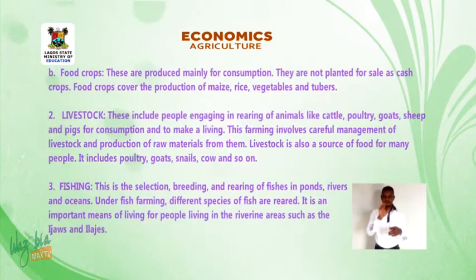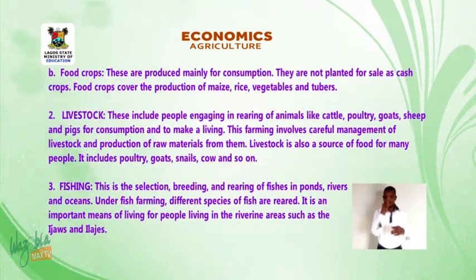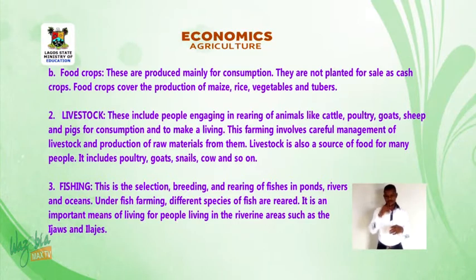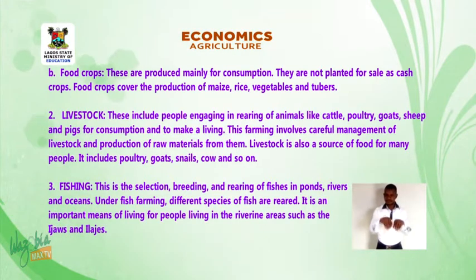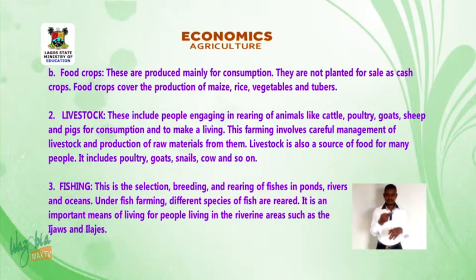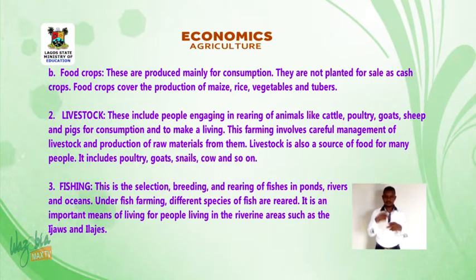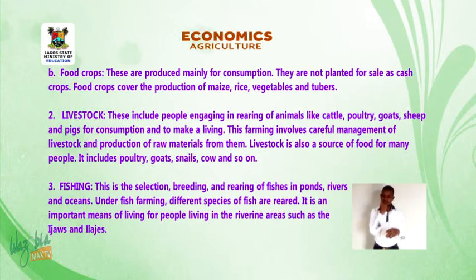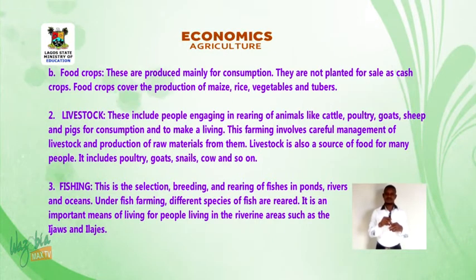B. Food crops: These are produced mainly for consumption. They are not planted for sale as cash crops. Food crops cover the production of maize, rice, vegetables, and tubers.